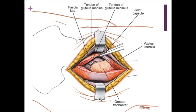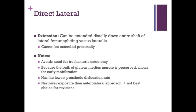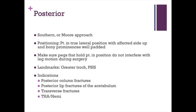Dangers here include the superior gluteal nerve with too proximal dissection through the gluteus medius, the femoral nerve as you head medial and superficial, the femoral artery and vein similarly, and the transverse branch of the lateral femoral circumflex artery if preserving femoral head blood supply. This approach avoids a trochanteric osteotomy because the bulk of the gluteus medius is preserved, allows earlier mobilization with better gait mechanics, but is a narrower exposure than the anterolateral approach and not ideal for revision surgeries.